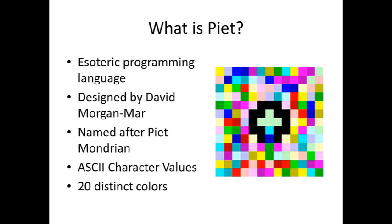So what is PEAT? To the right of your screen is an example of an enlarged PEAT program. PEAT is a type of esoteric programming language. Esoteric programming languages, also known as esolangs, refer to programming languages that experiment and test the boundaries of programming language design. PEAT was designed by David Morgan Marr and consists of bitmaps that look like the abstract art of the Dutch painter Piet Mondrian. Hence, the PEAT programming language was named after the artist.